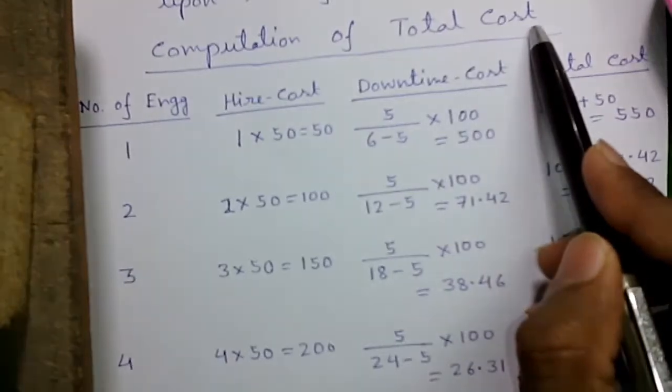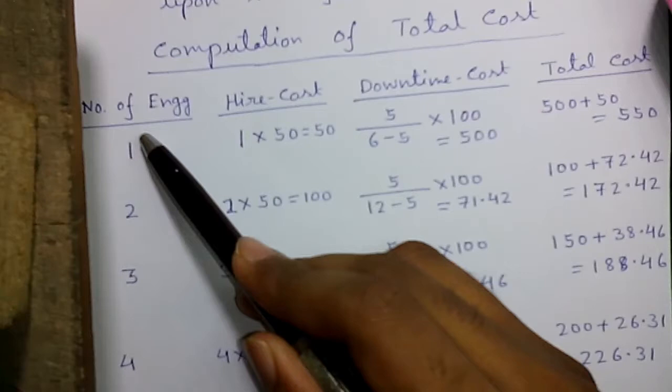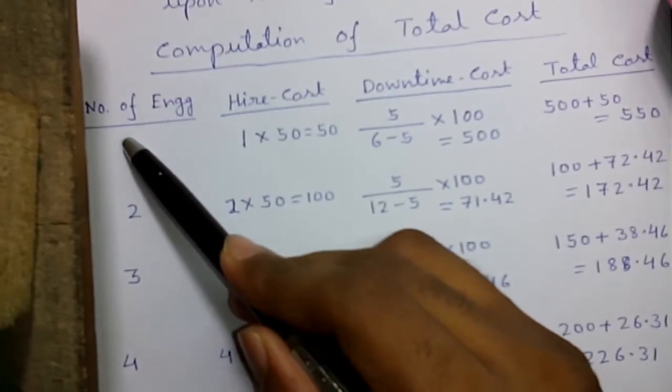Now the computation of total cost table. We know more engineers means more cost the bank has to pay.